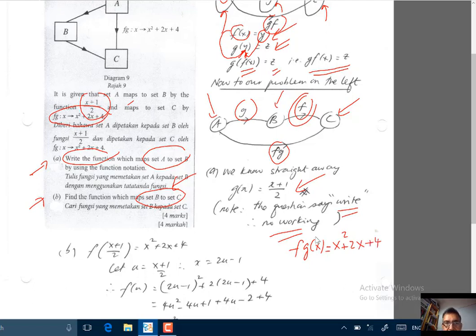Ini diberikan dalam soalan. So g(x) now we know, which is (x+1)/2. So kita boleh tulis f((x+1)/2) adalah sama dengan x kuasa 2, tambah 2x, tambah 4, as you can see here.